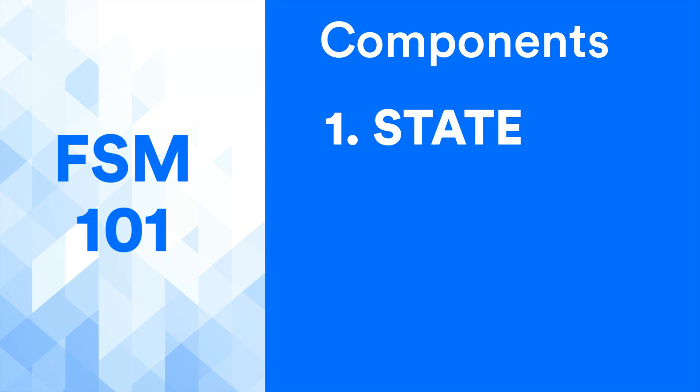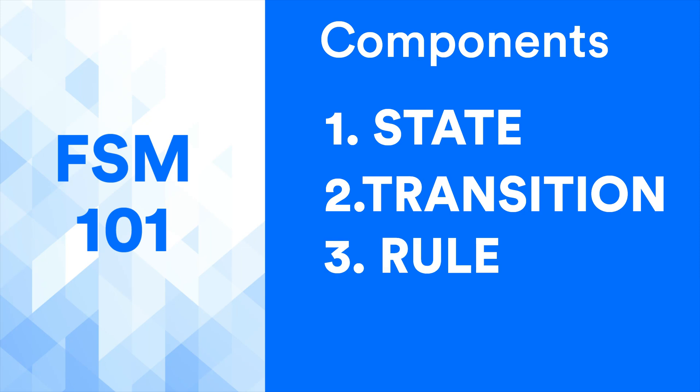The second component is the transition. The transition component defines the relations between different states. The third component is a rule. The rule is a component that is used to trigger a state transition. Example: player on site, close enough to attack, and lost or killed player are all examples of rules in an FSM.